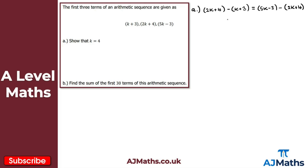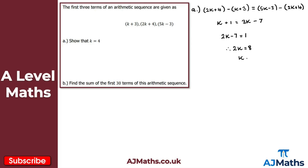Simplifying the left-hand side: 2k plus 4 minus k plus 3 gives k plus 1. On the right-hand side: 5k minus 2k is 3k, and minus 3 minus 4 gives minus 7, so we get 3k minus 7. Subtracting k from both sides gives 2k minus 7 equals 1. Adding 7 to both sides: 2k equals 8, so k equals 4, as required.